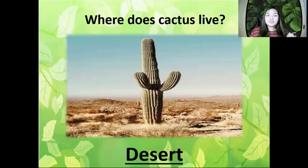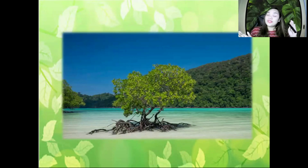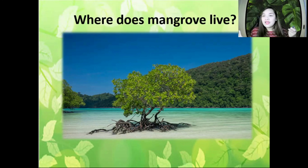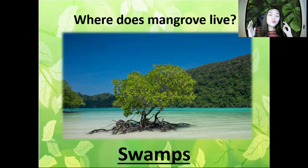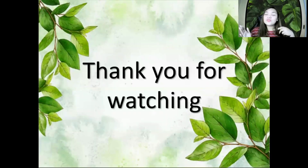And for the last question — what is the name of this plant? It is mangrove. Where does mangrove live? Mangrove lives in the swamps. Swamps are a body of water. Thank you so much for participating and joining me in this video. Thank you for watching, and see you in the next video. Goodbye!